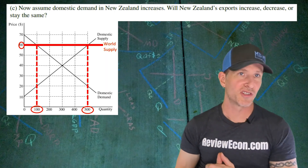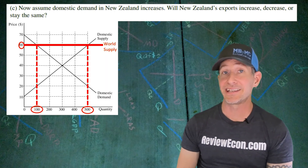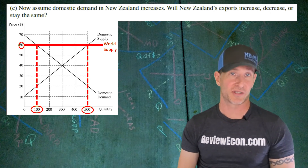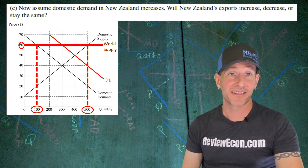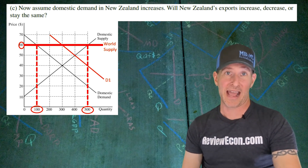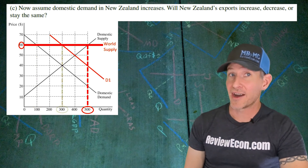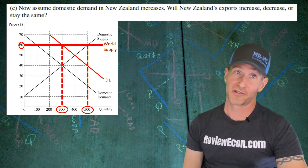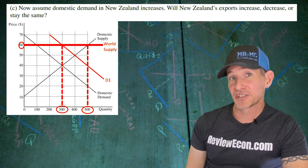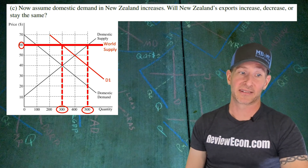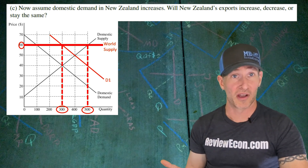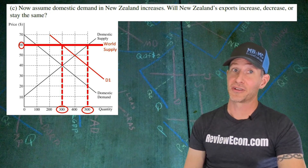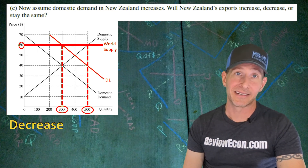For part C, we assume that domestic demand for New Zealand wool increases. We have to state if New Zealand's exports will increase, decrease, or stay the same. Let's shift the demand curve to the right and see what happens. On the new demand curve, 300 units of wool will be domestically consumed instead of the previous 100 units. 500 units of wool is still produced domestically, so the difference — just 200 units — is what will be exported. Since 200 units is less than 400 units, the answer is: exports decrease.